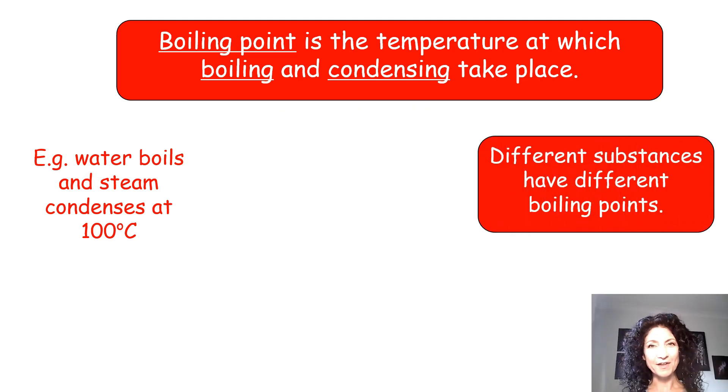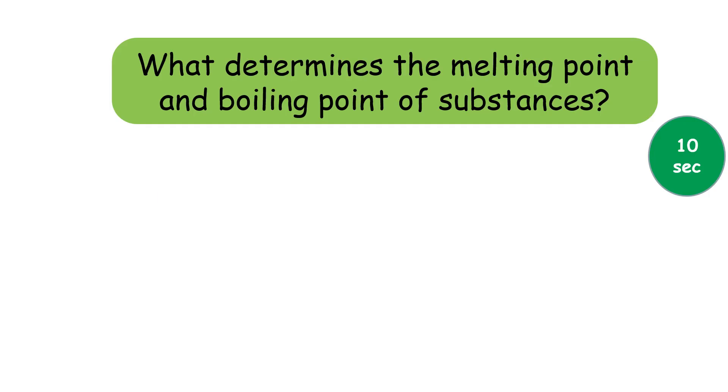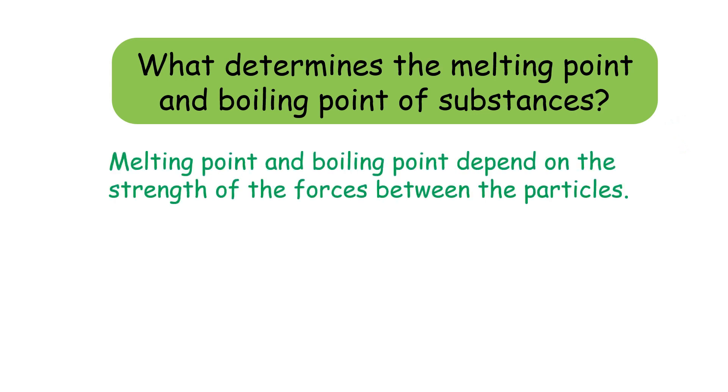Different substances have different boiling points. Why is that? Why don't all substances boil and condense and freeze at the same temperature? It's all to do with the different forces between the particles. Some substances have very strong forces between their particles, whereas others have weaker forces. Let's see if you can recap that in your own words. What determines the melting point and boiling point of substances? Ten seconds. Melting point and boiling point depends on the strength of the forces between the particles.